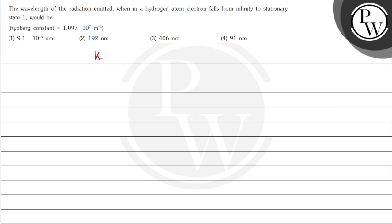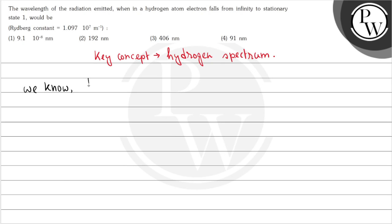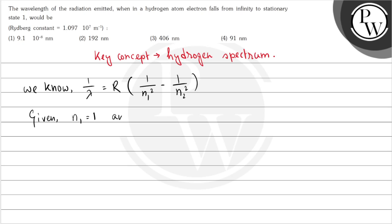So let's first look at the key concept. From the hydrogen spectrum, we know that the wavelength of radiation is given by 1 by lambda is equal to R into 1 by N1 squared minus 1 by N2 squared. Here it is given that N1 is equal to 1 and N2 is equal to infinity, along with that we have R is equal to 1.097 into 10 to the power 7 meter inverse.